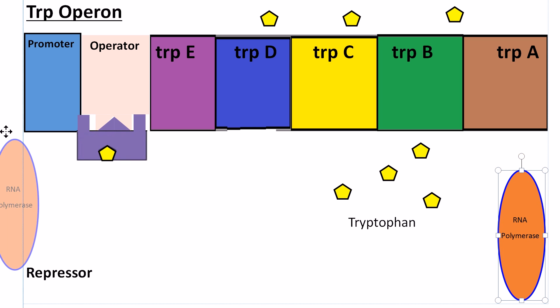Just to show you, RNA polymerase physically cannot make its way down the DNA sequence with the repressor in the way.